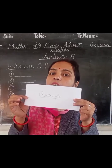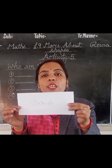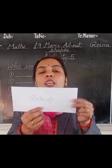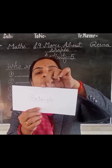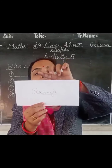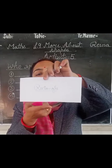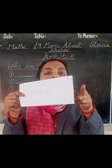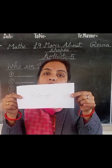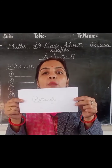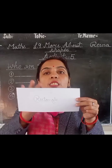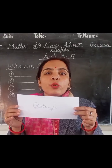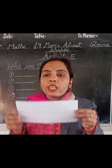So both rectangle and square have 4 sides and 4 corners. But in a rectangle, opposite sides are equal — this side equals the opposite side, and this side equals the opposite side. In a square all sides are equal, while in a rectangle only opposite sides are equal. Is it clear?